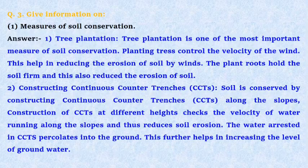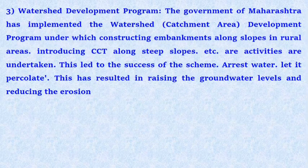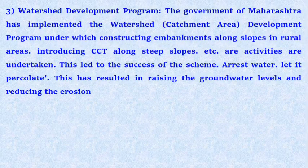Second, constructing continuous contour trenches (CCTs). Soil is conserved by constructing continuous contour trenches along the slopes. Construction of CCTs at different heights checks the velocity of water running along the slopes and thus reduces soil erosion. The water arrested in CCTs percolates into the ground. This further helps in increasing the level of ground water.